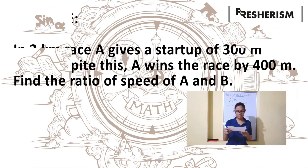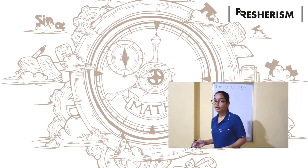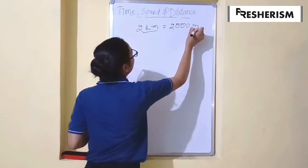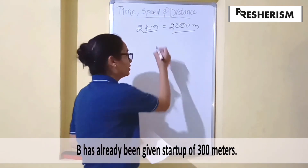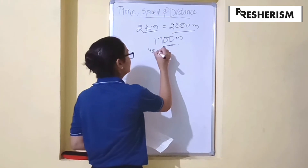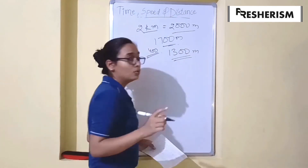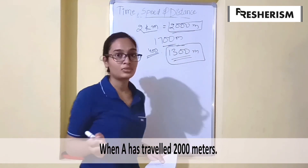Let us do another question. In a 2 kilometers race, A gives a start up of 300 meters to B. Despite this, A wins the race by 400 meters, and we have to find the speeds of A and B. The race is 2000 meters total. A has to travel the whole distance while B has to travel only 1700 meters. Despite that, B loses by 400 meters and does not cover that 400 meters, giving us 1300 meters. So B travels 1300 meters in the time A has traveled 2000 meters.